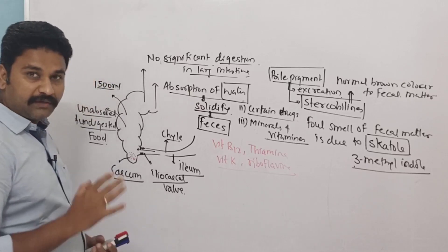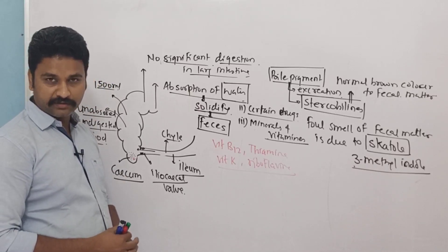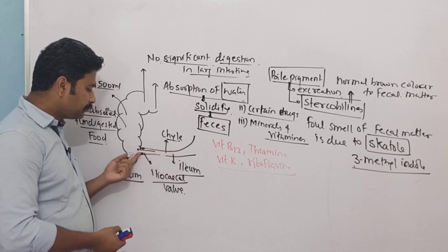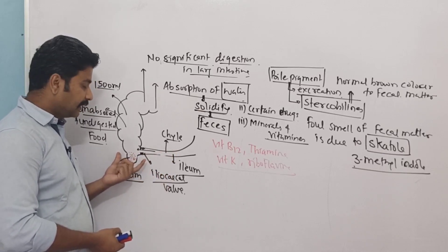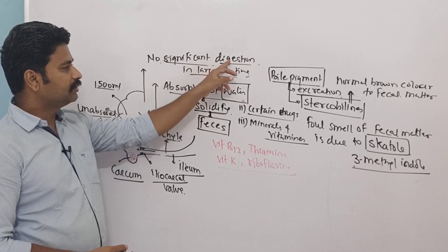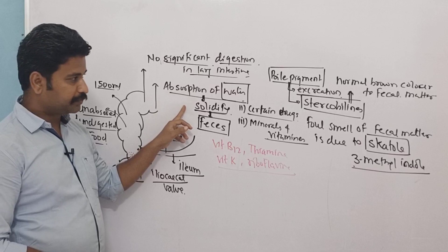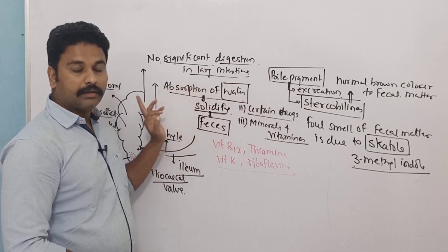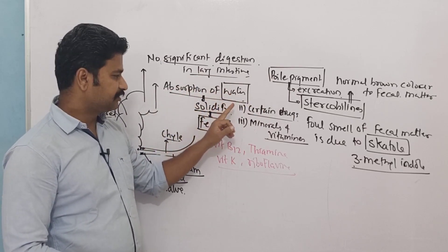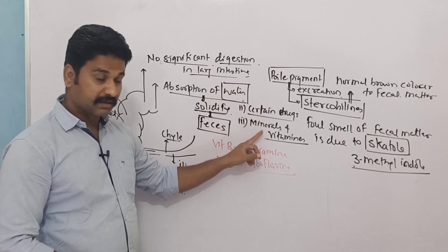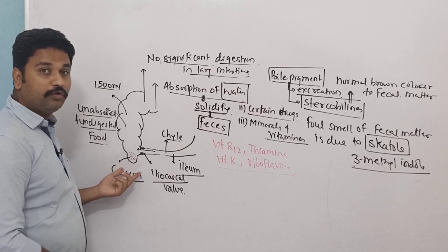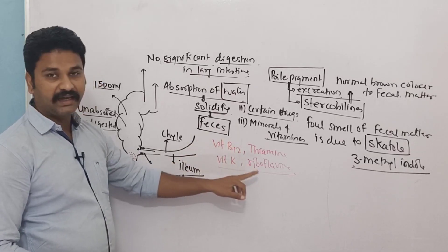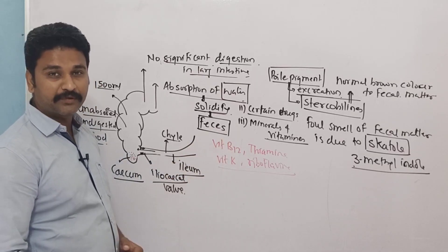To summarize: whatever substances were absorbed in the small intestine, the remaining material slowly passes down into the large intestine. The large intestine does not play a significant role in digestion, but it helps in absorption and excretion. It mainly helps in the absorption of water, certain drugs, minerals, and vitamins. Plus, with the help of colonic bacteria, it produces vitamins like vitamin B12, thiamine, vitamin K, and riboflavin, which eventually get absorbed in the large intestine.